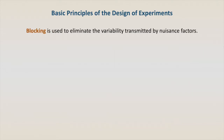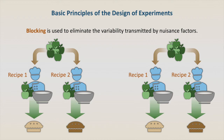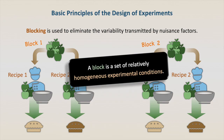Blocking is used to eliminate the variability transmitted by nuisance factors. Imagine that the cooker can only make 2 pies each day. Then he buys a batch of apples and makes 1 pie using recipe 1 and 1 pie using recipe 2. Another day, the cooker again buys a batch of apples and makes 1 pie using recipe 1 and 1 pie using recipe 2. In this case, the pies are divided into two blocks. Each block is a different batch of apples at a different day. Generally, a block is a set of relatively homogeneous experimental conditions.